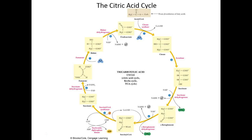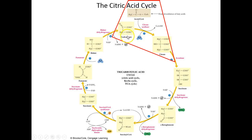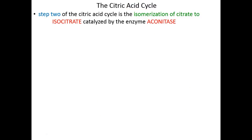This is our roadmap for the citric acid cycle, and we just discussed step one. Acetyl comes into the process through the PDC, links up with oxaloacetate giving us citrate, and CoA is released to go repeat another linkage to acetyl. Step two is the isomerization of citrate to isocitrate, and the enzyme responsible for catalyzing step two is aconitase.